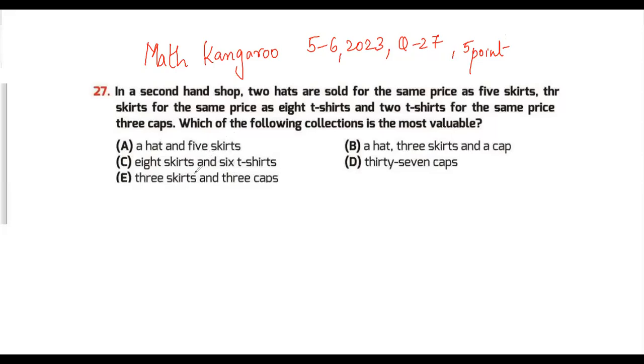Question 27: In the second-hand shop, two hats are sold for the same price as five skirts. So two hats are sold for the same price as five skirts. The skirts, oh one second, this is three skirts for the same price as eight t-shirts, so for eight t-shirts. And two t-shirts for the same price as three caps. Now, which of the following collections is the most valuable?